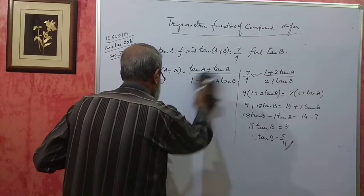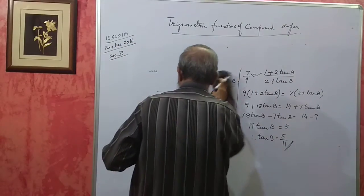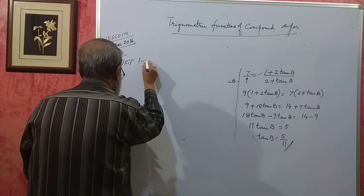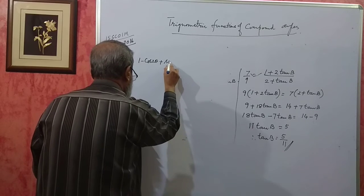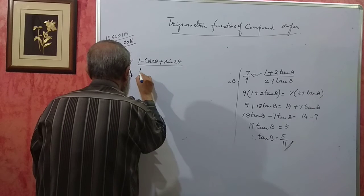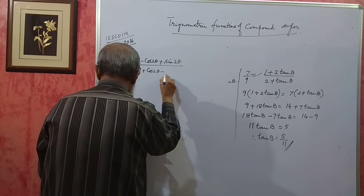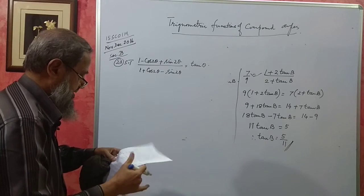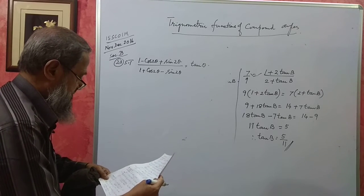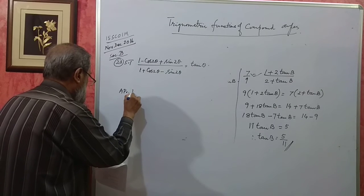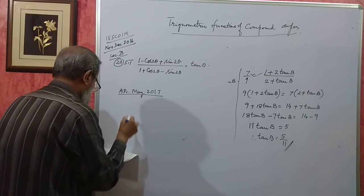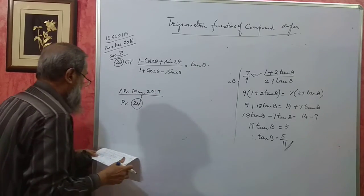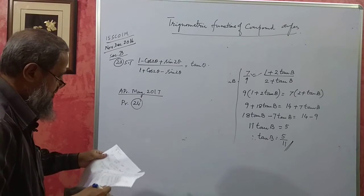In the same paper there is problem 23: show that (1 − cos2θ + sin2θ) / (1 + cos2θ − sin2θ) = tanθ. You can try this — it is very similar to problem 24 from April-May 2017, section B for 5 marks. You can try it yourself.